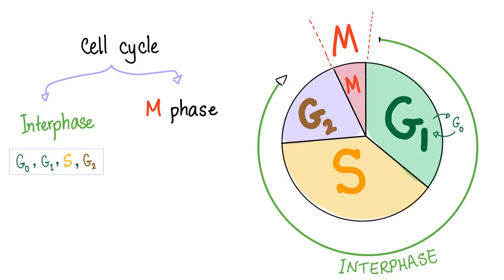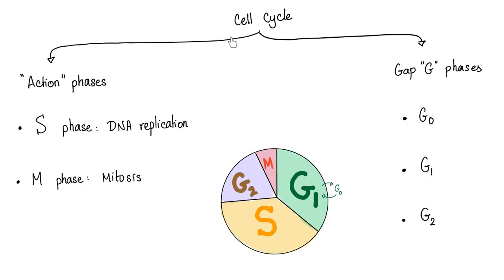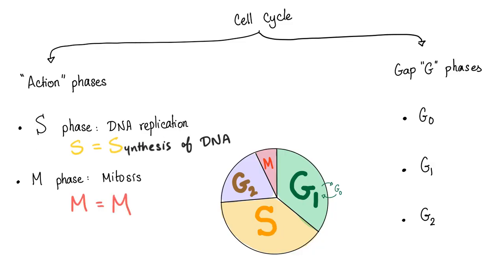Here's the beautiful cell cycle. You can divide it into the interphase, which is G0, G1, S, and G2. And you have the M phase, which is mitosis. Why do you put the M phase in a separate category? Because this is the only one that has cell division. You can divide the cell cycle into action phases and gap phases. The gap phases are G0, G1, and G2 — these are for growth. In the S phase, we replicate the DNA. But in the M phase, this is the actual mitosis, the actual cell division.